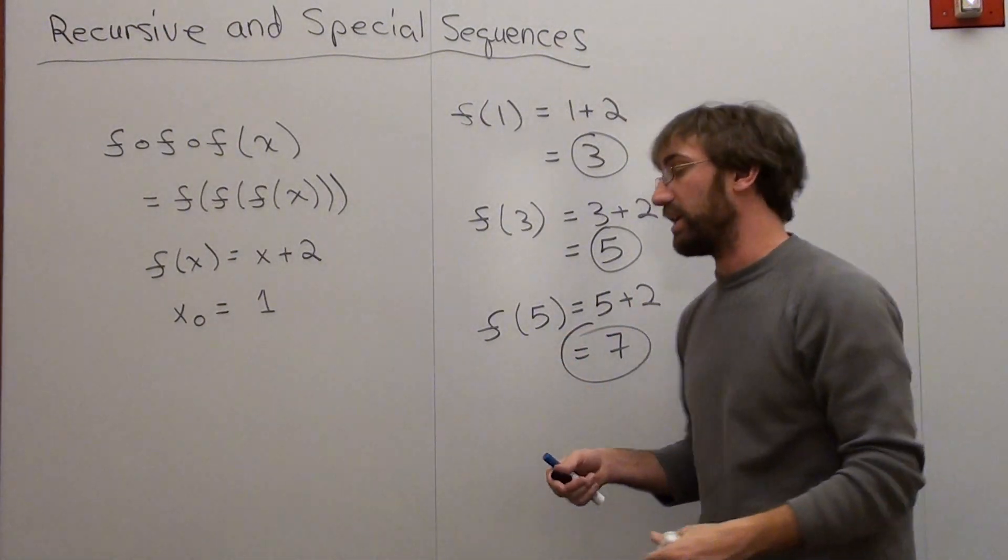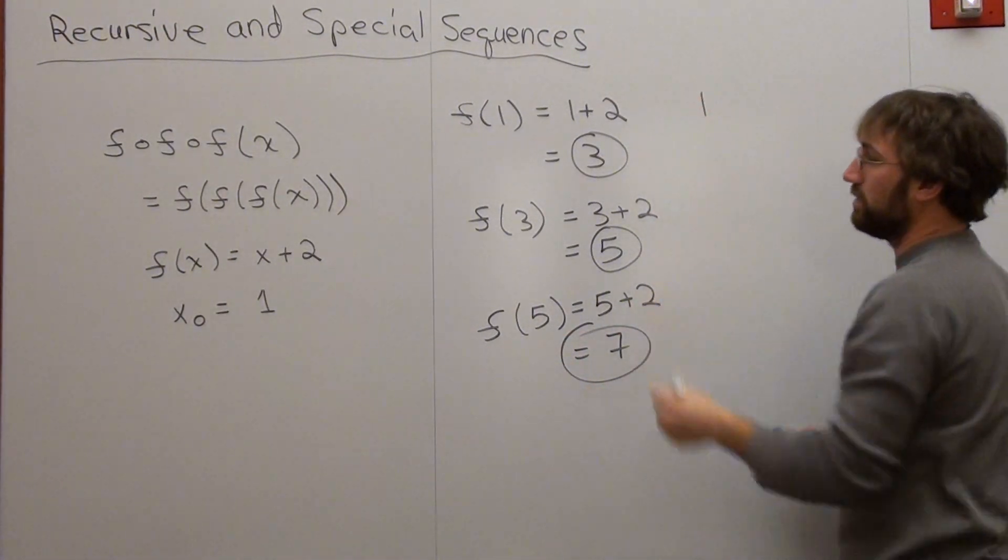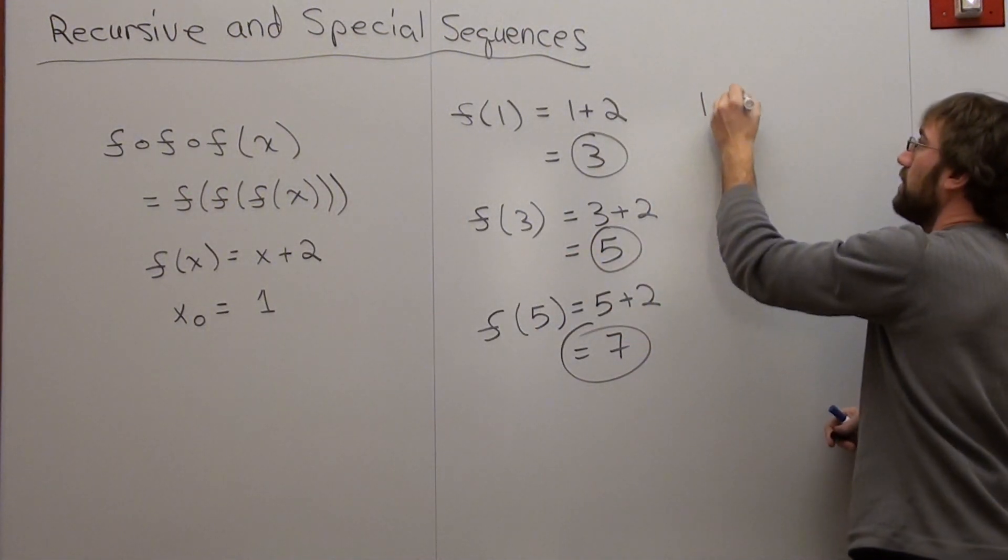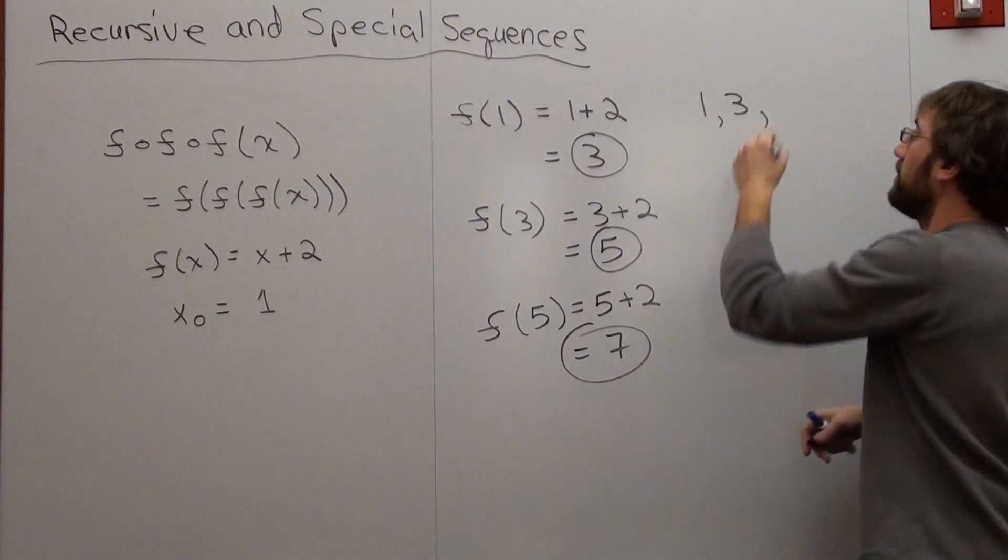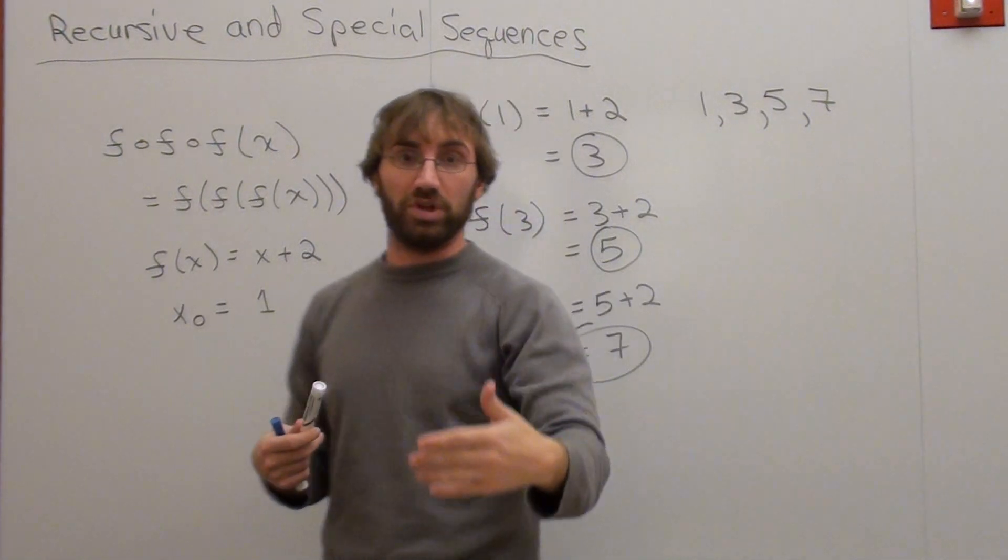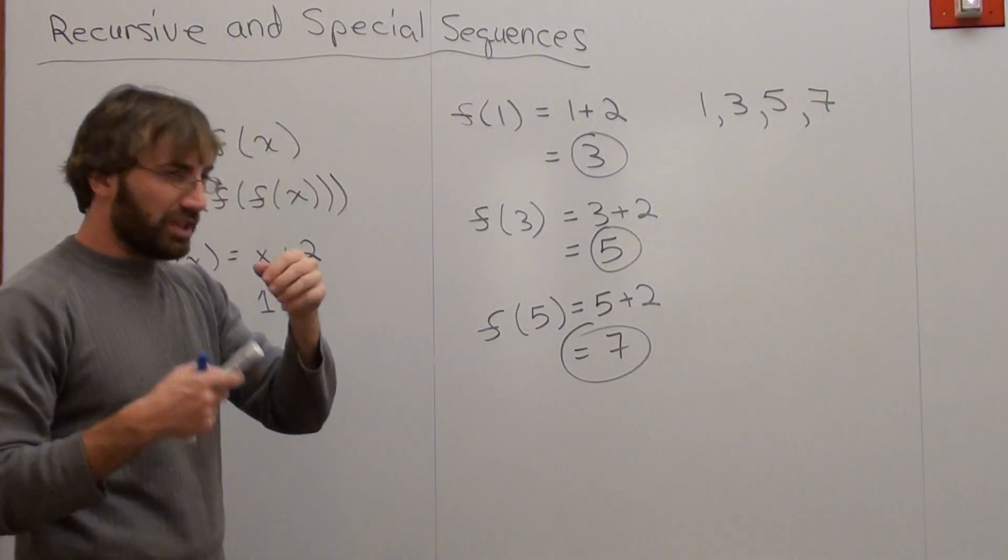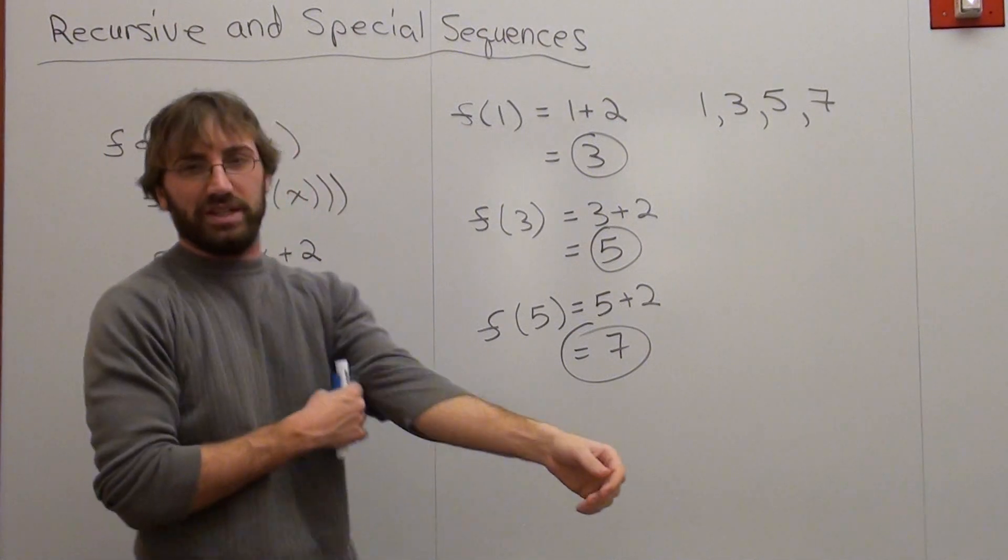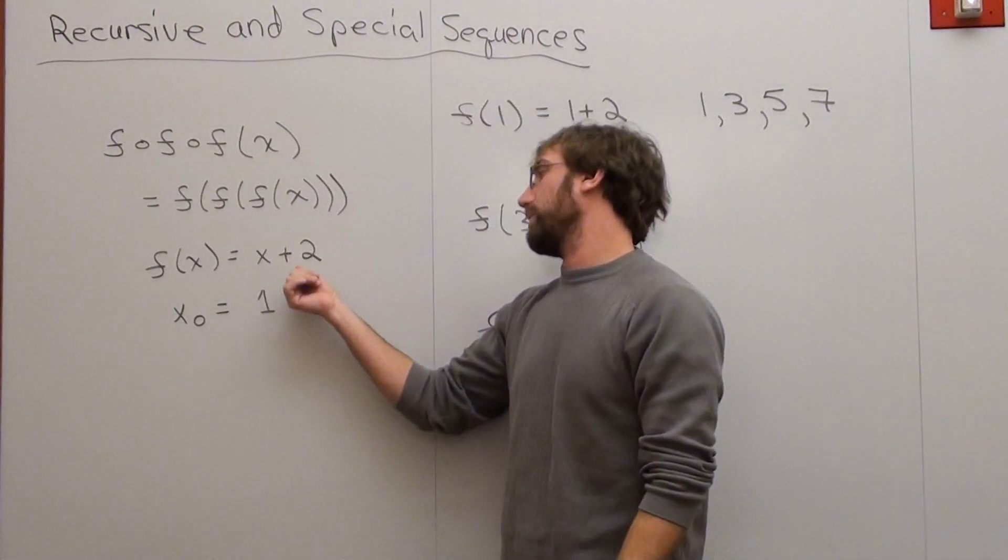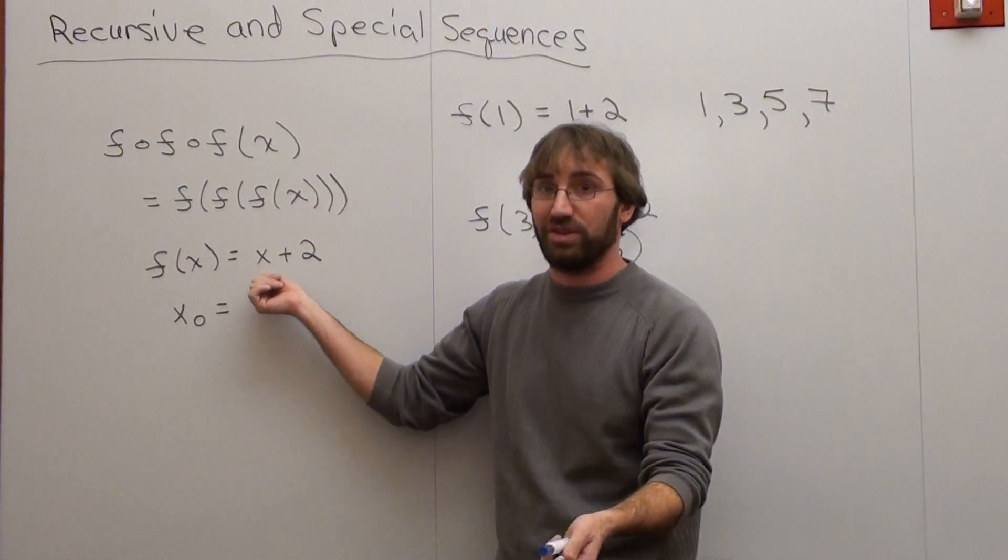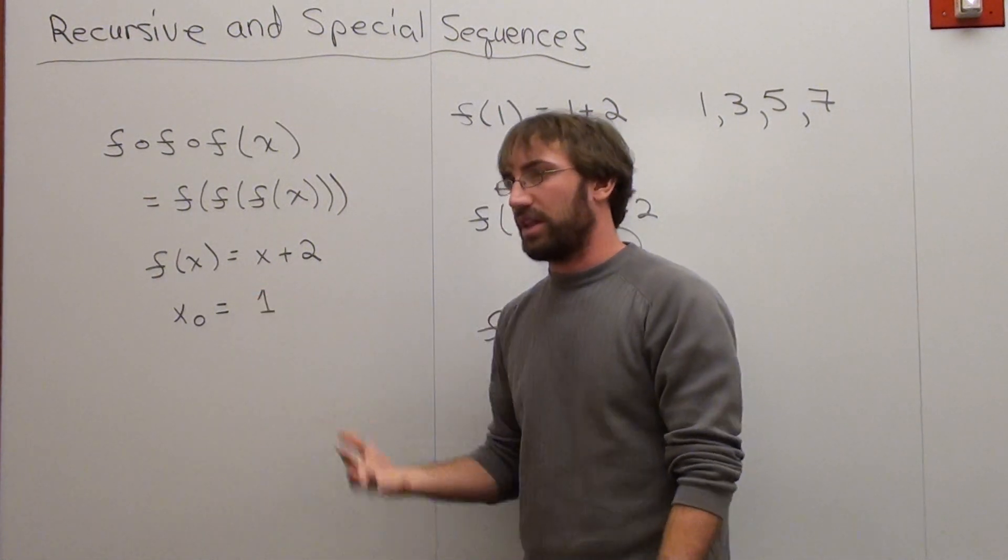So our sequence, if we write it out, is 1, that's our first point, then 3, then 5, then 7. But it actually is painfully obvious what it is. If you don't really look at the subscripts or try to figure it out, it's actually really quite easy. All we're really doing is we're going to add 2 each time. So the first one's 1, so the next one's going to be 3, the next one's going to be 5, the next one's going to be 7.